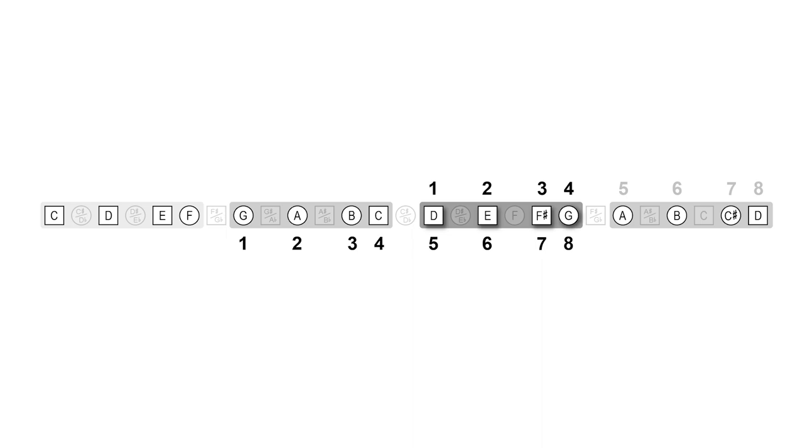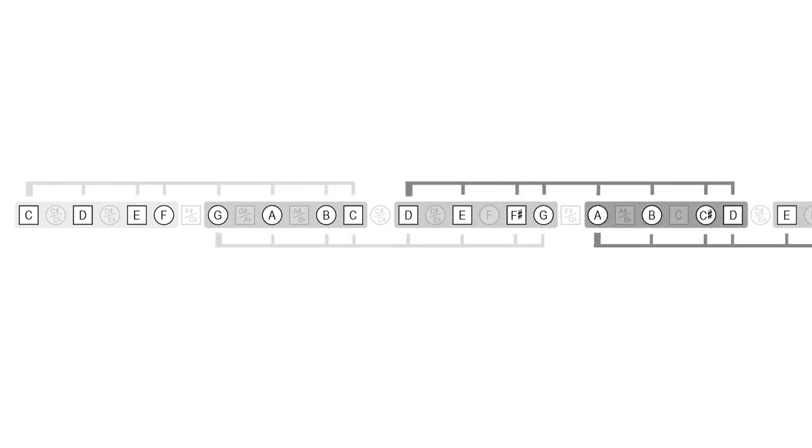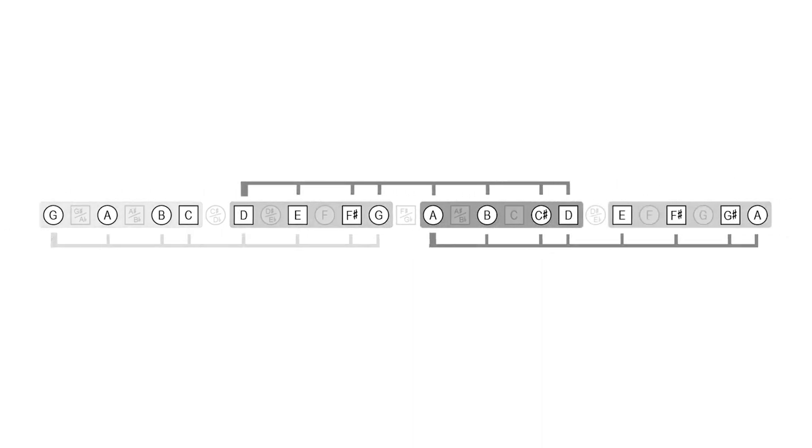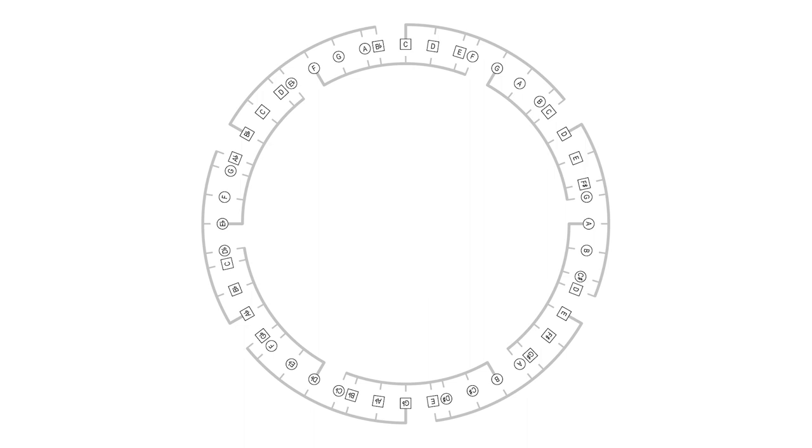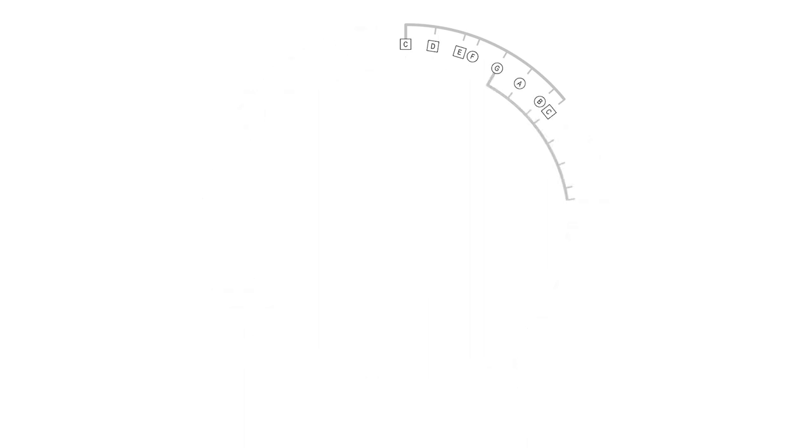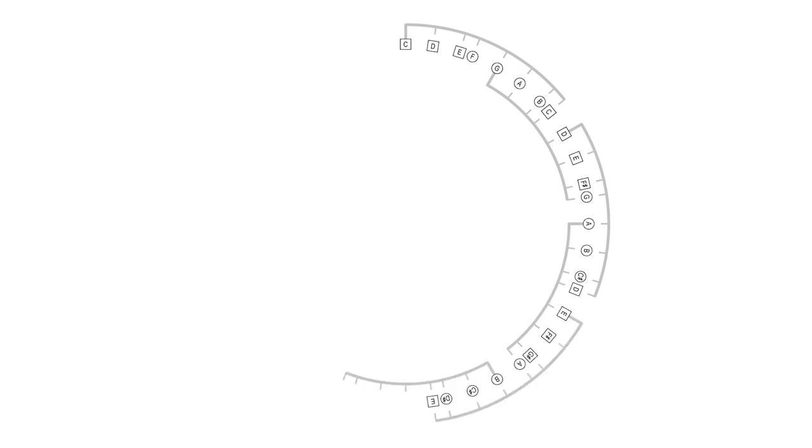Continuing on, D major then leads to A major, where the A major scale begins on the fifth note of D. And then each scale leads to and overlaps with the next in the same continual chain. And by continual, I mean it really goes on forever. So we can picture it all like this, as a daisy-chain sequence that forms an endless ring we call the circle of fifths, because each new scale starts on the fifth note of the previous scale. So it's the circle of fifths.